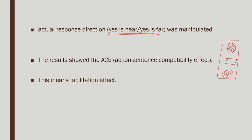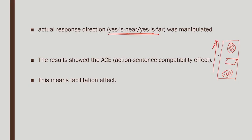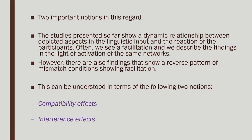The results showed the action-sentence compatibility effect. Now, we have seen a lot of studies — both visual, auditory, and motor — that show simulation through language. There are two possible kinds of impact: does mental simulation facilitate or inhibit a subsequent action? The studies so far show a dynamic relationship: as the sentence unfolds, the simulation also unfolds. Often we see a facilitation effect described in terms of activation of the same neural networks, but there are also findings showing a reverse pattern.